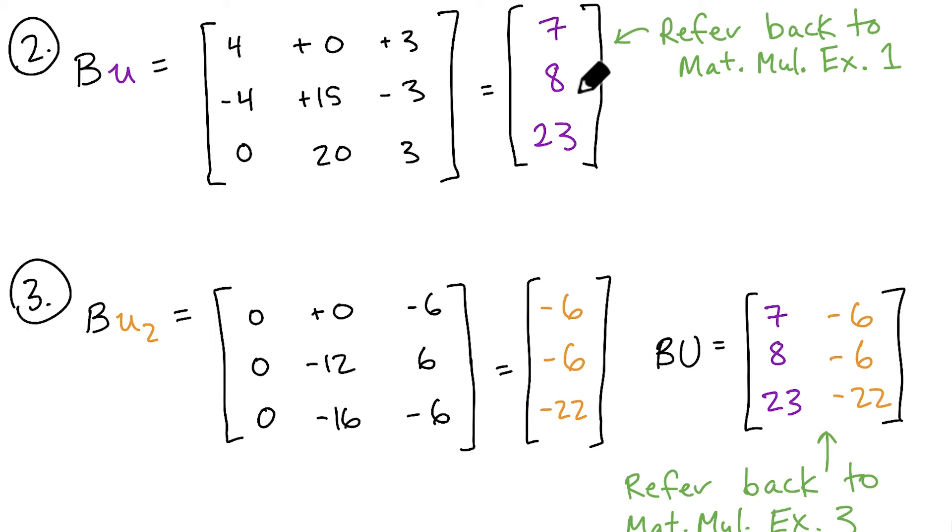So BU gives us the first column, and then all we need to do is calculate B times the vector U2. Again, going back over the matrix multiplication exercises from earlier should give you the tools you need to figure out how to perform this series of dot products and get this final vector.